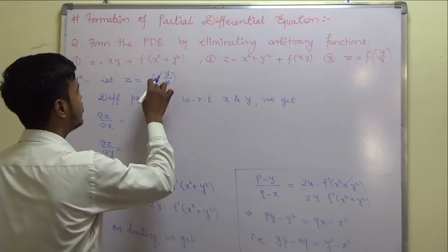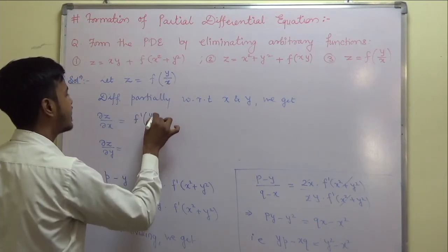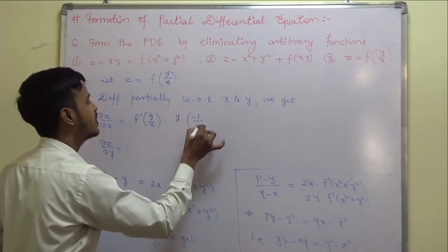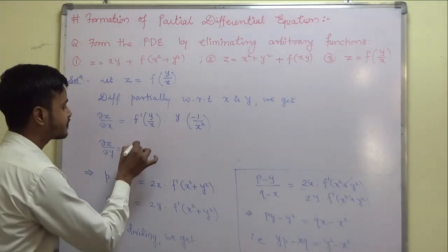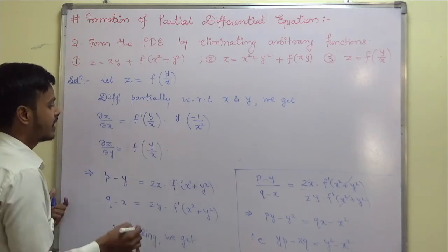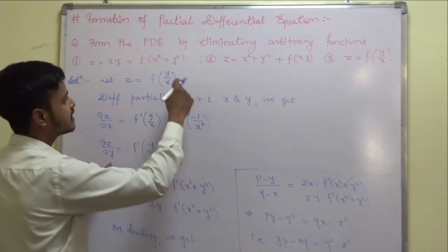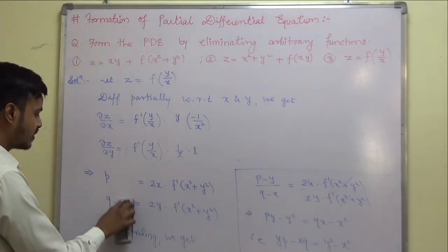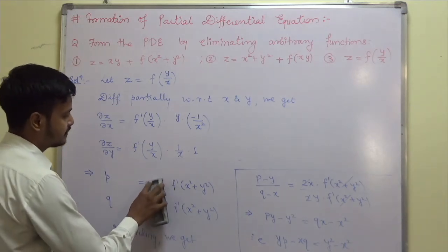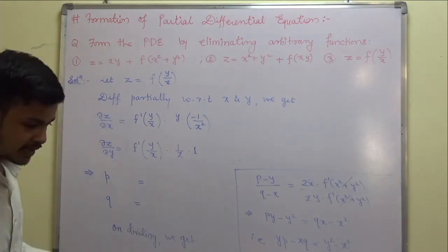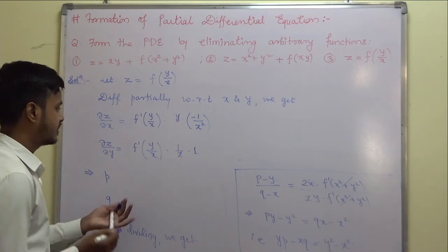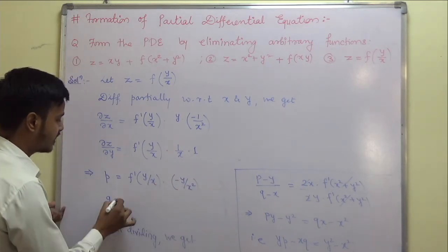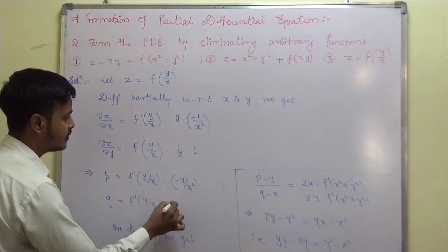When you differentiate partially with respect to x, del z by del x equals f prime of y by x multiplied by the derivative of y over x with respect to x, which is minus y by x squared. And del z by del y equals f prime of y by x multiplied by 1 over x, since 1 over x is constant and the derivative of y with respect to y is 1. So p equals f prime of y by x times minus y by x squared, and q equals f prime of y by x times 1 by x.